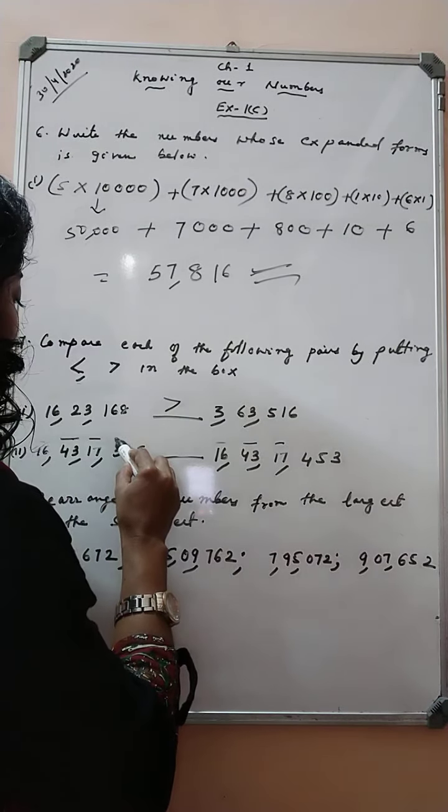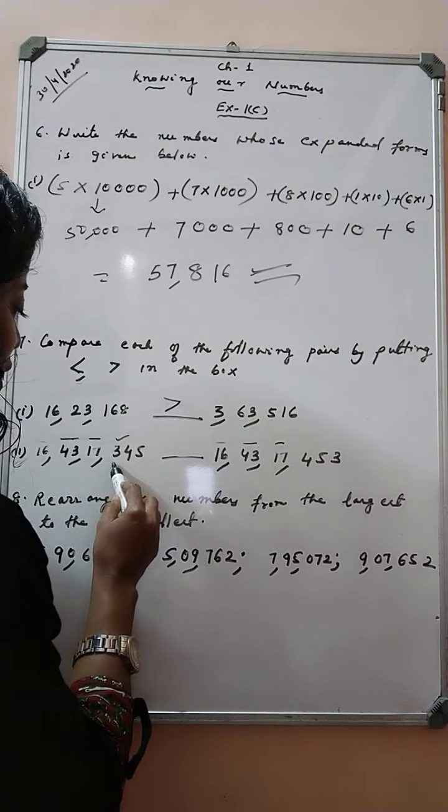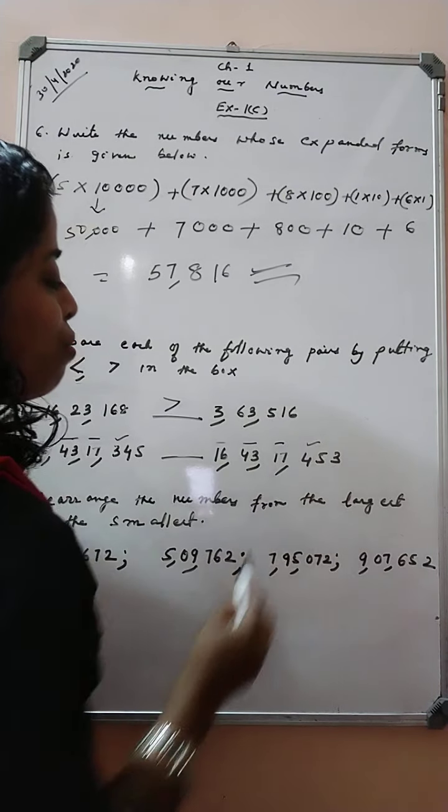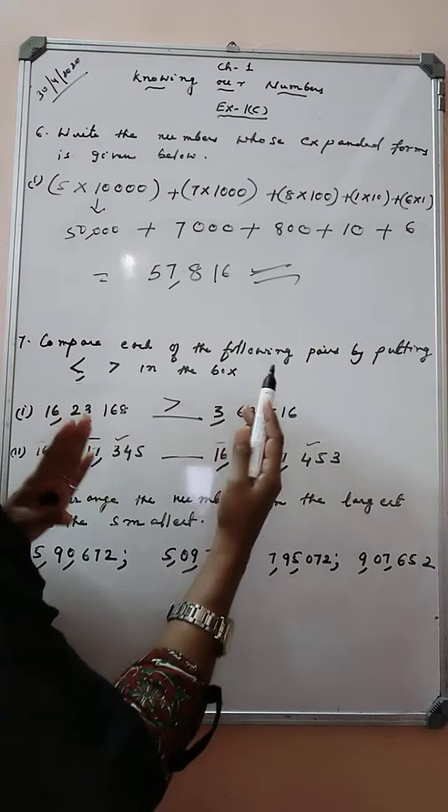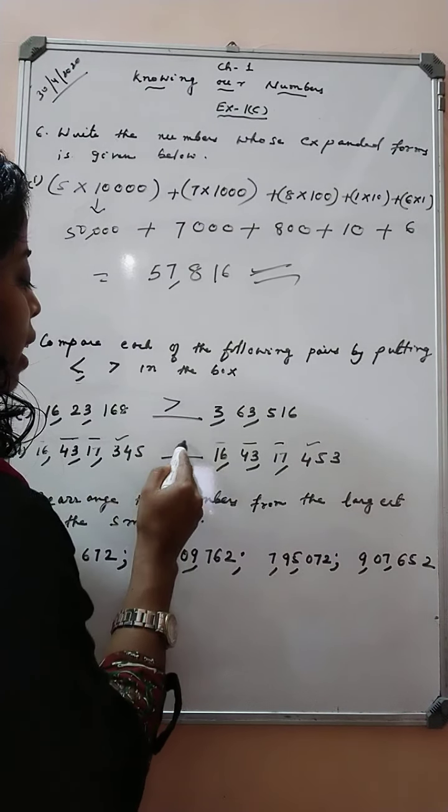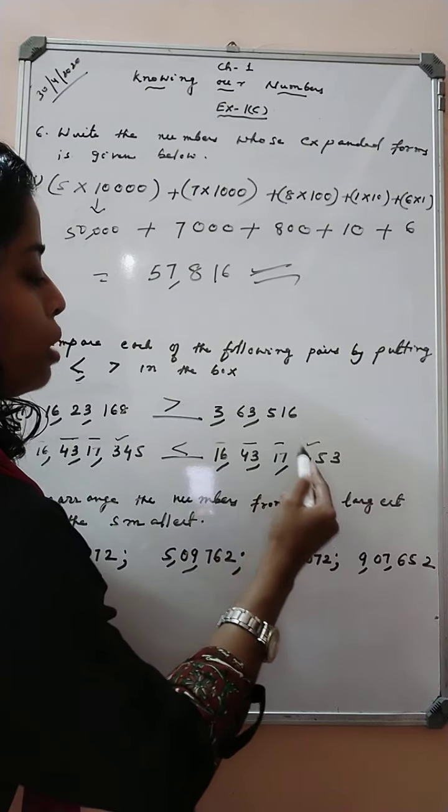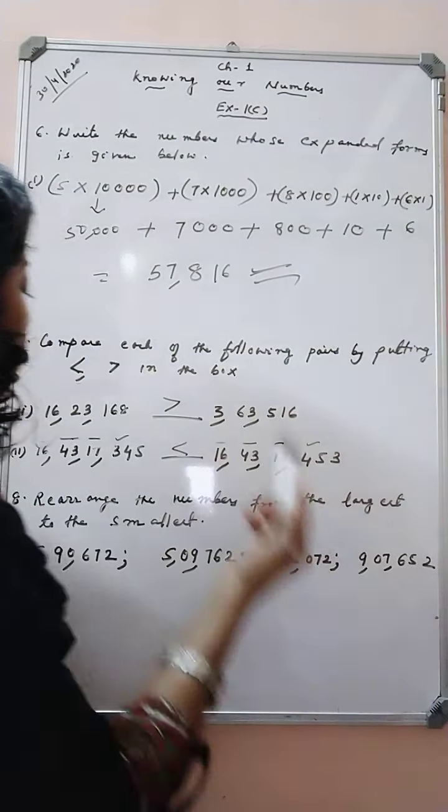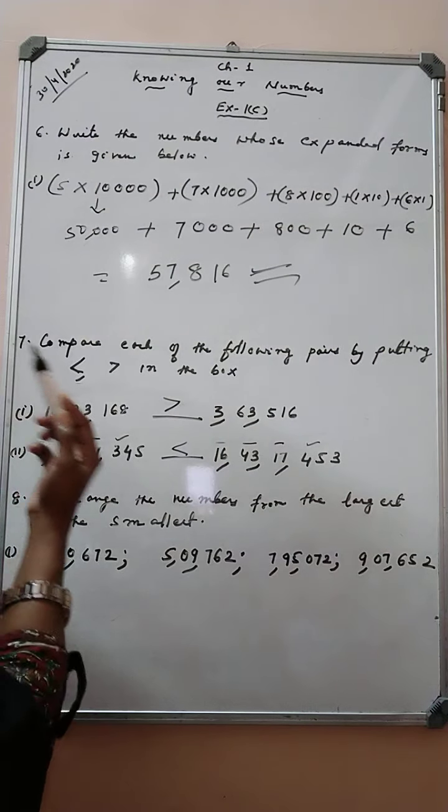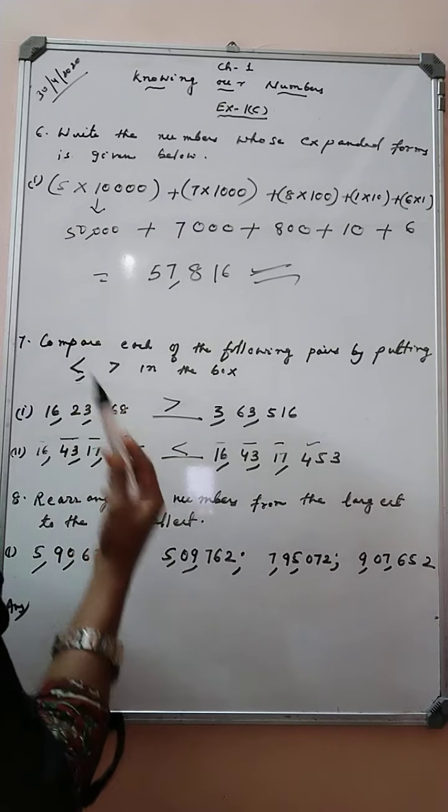Yes. In the hundred place value, we have 3 here and we have here 4. As 4 is greater than 3. That is why 16 crore 43,17,453 will be greater than 16 crore 43,17,345.